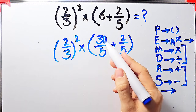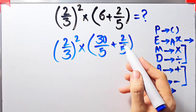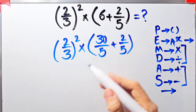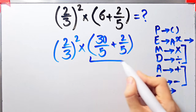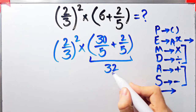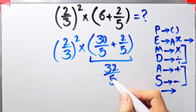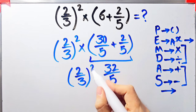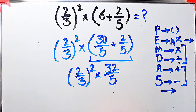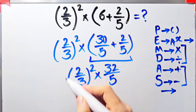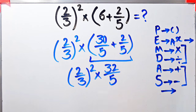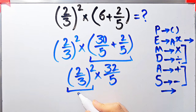Now the question is two over three to the power of two, times open parentheses thirty over five plus two over five close parentheses. We simplify the parentheses: thirty over five plus two over five equals thirty-two over five. Now the question is two over three to the power of two, times thirty-two over five. We have exponent and multiplication, so first we simplify the exponent because it has higher priority than multiplication.